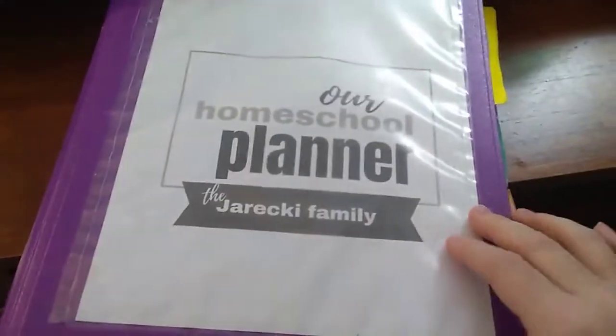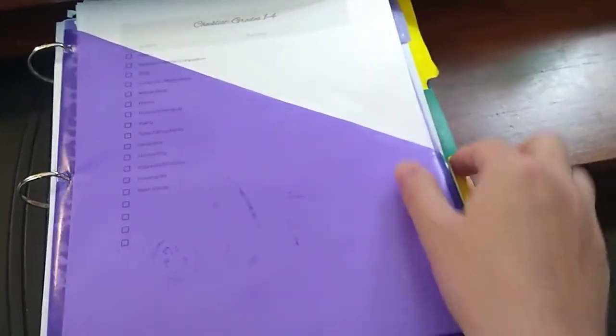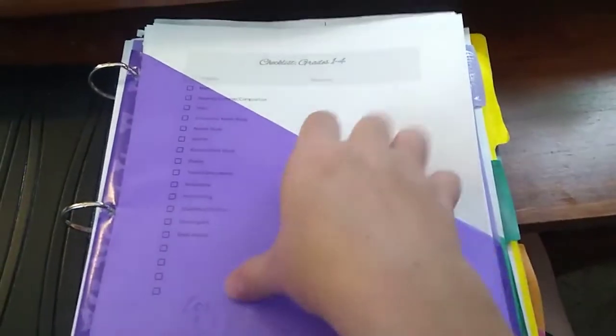Here's a quick look inside of our homeschool master binder. I have all the sections separated by these folder dividers, and I like the ones with the pockets because you can stick extra papers in them.